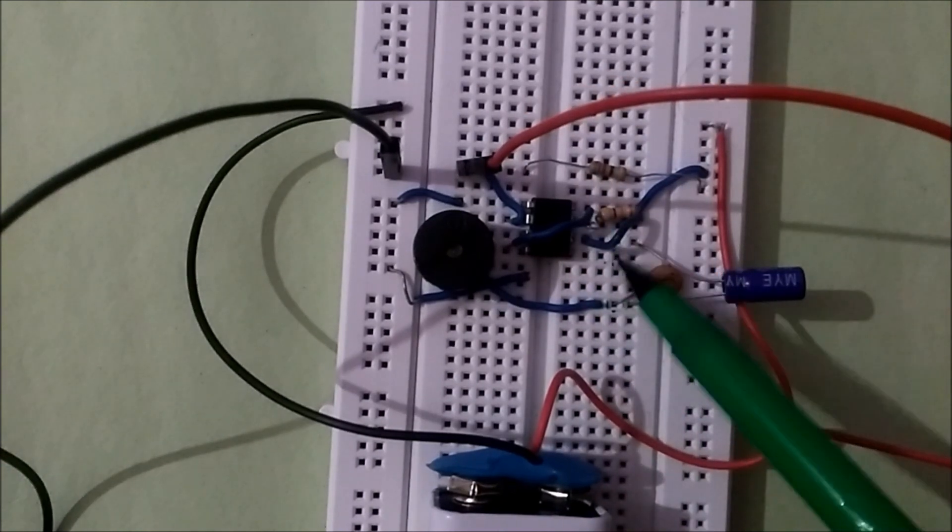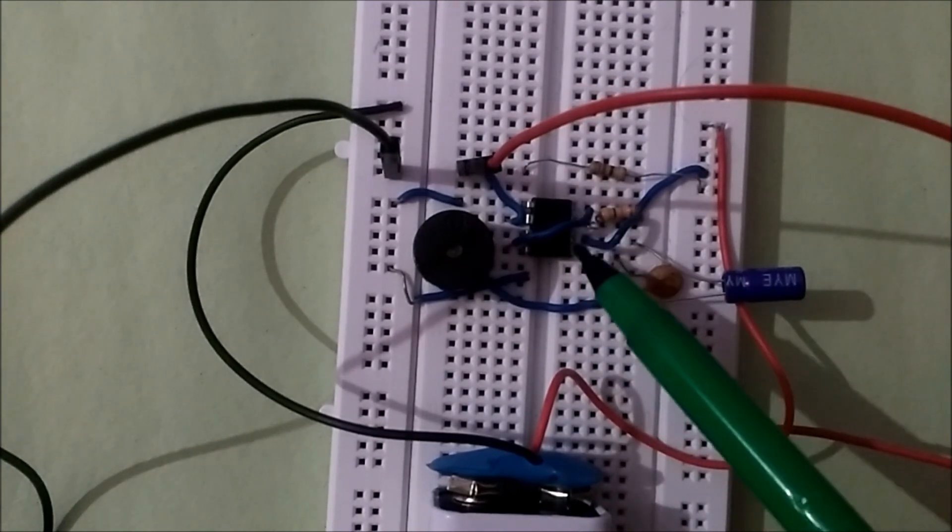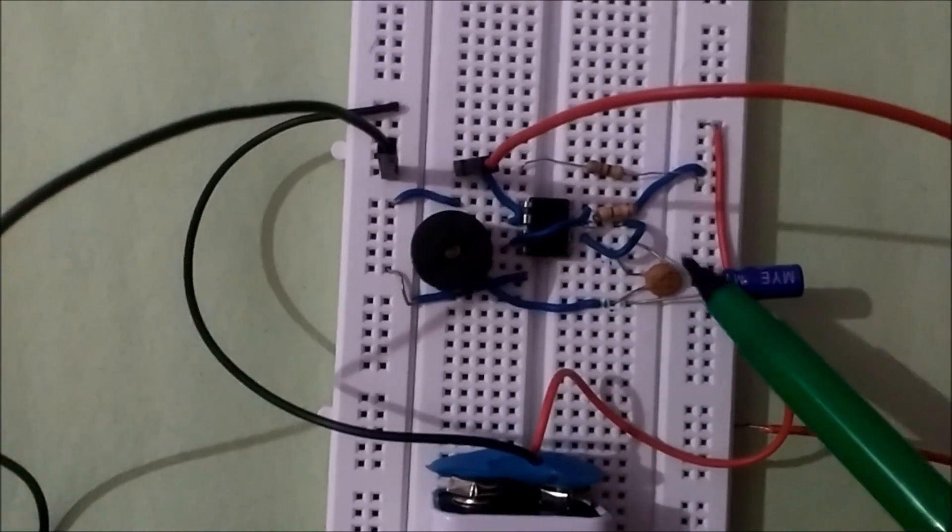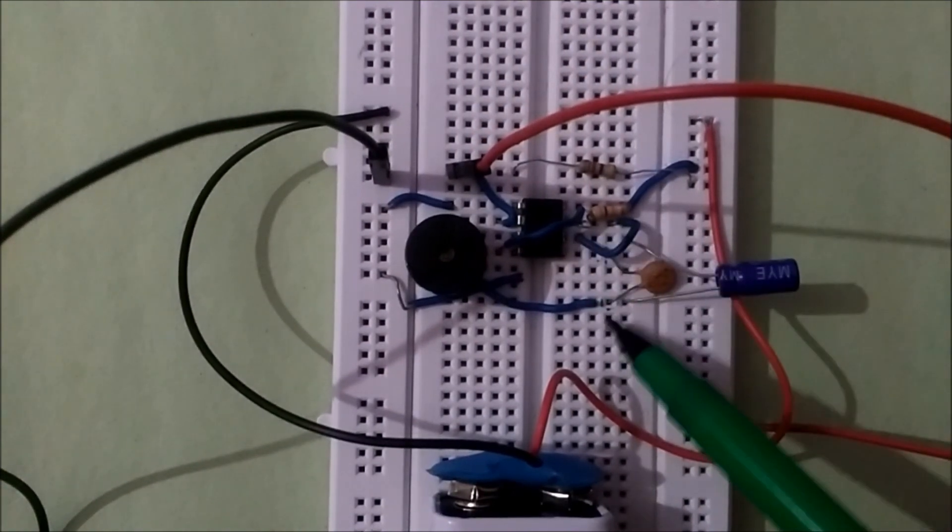6th and 7th pins are shorted together. That means discharge and threshold pins are shorted together. And a capacitor is connected from the 6th pin, that is threshold pin, to ground.